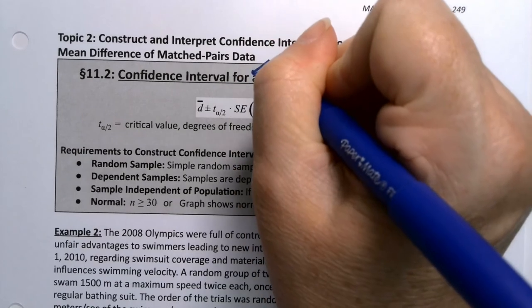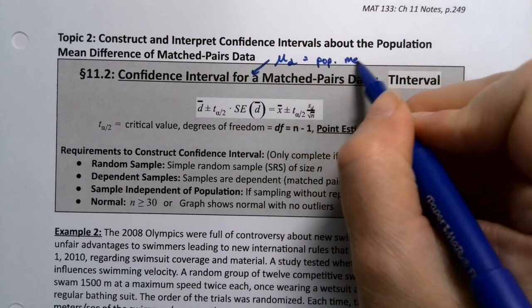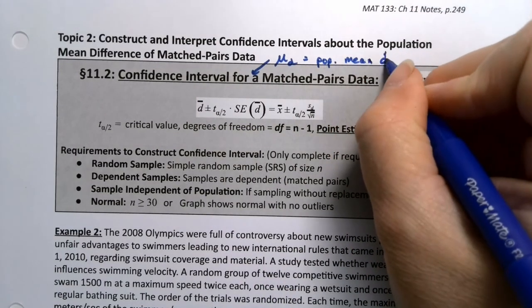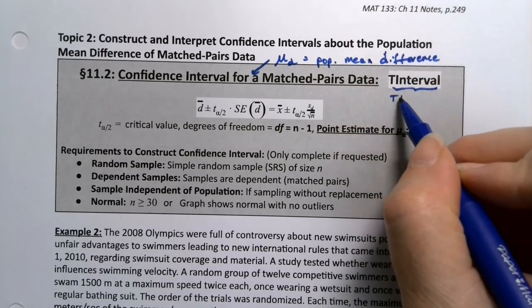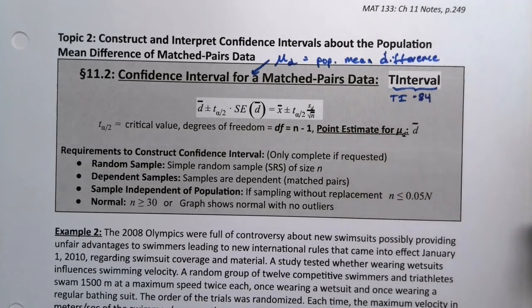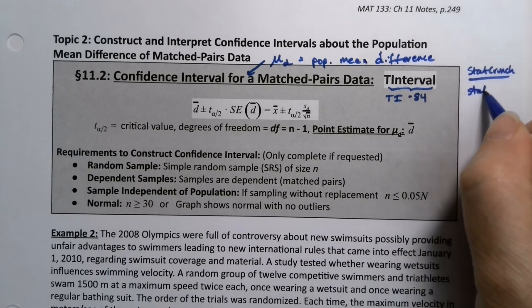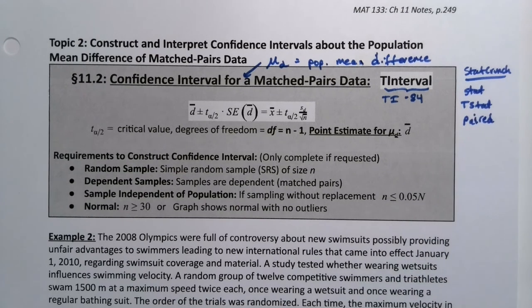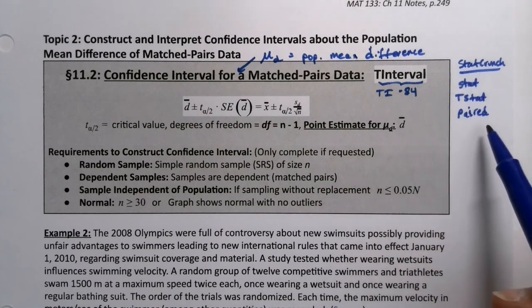And then I can say this is for mu_d, the mean difference. And on the calculator, it's t interval. So that's on the TI-84. And on StatCrunch, it's the same place we went before. So on StatCrunch, you would go to stat, tstat, and you would choose paired. It's the same place you go for hypothesis tests. I kind of like StatCrunch in that way because it's a one-stop shop.